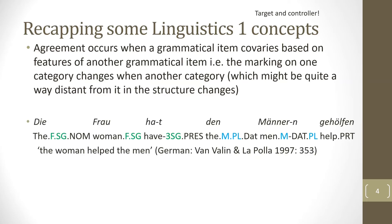Here is a German example meaning 'the woman helped the men.' We see singular and feminine features: the woman, which is feminine and singular, results in third person singular agreement on the tensed verb and feminine singular agreement on the determiner. In the second part, 'den Männern geholfen,' men is masculine, plural, and in the dative case, triggering agreement on the determiner den, which agrees in masculinity and plurality.